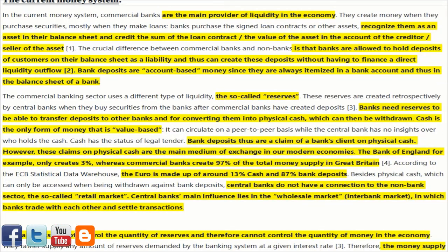In the current money system, commercial banks are the main provider of liquidity in the economy. They create money when they purchase securities, mostly when they make loans. Banks purchase signed loan contracts or other assets, recognize them as an asset in their balance sheet, and credit the sum of the loan contract or the value of the asset in the account of the creditor or seller. The crucial difference between commercial banks and non-banks is that banks are allowed to hold deposits of customers on their balance sheet as a liability and thus can create these deposits without having to finance a direct liquidity outflow.